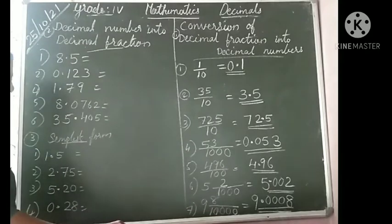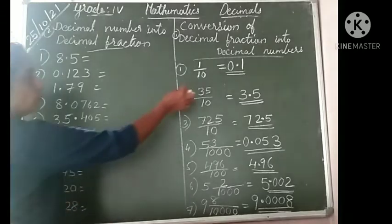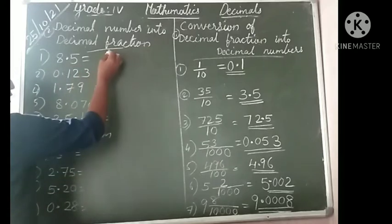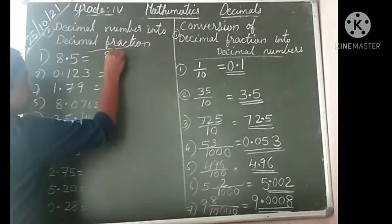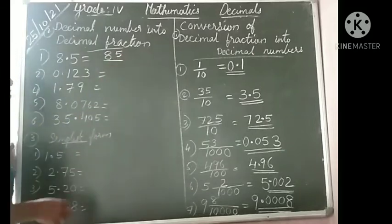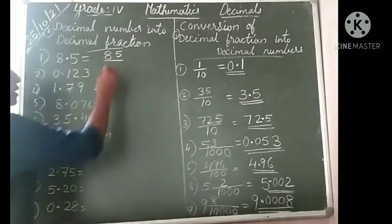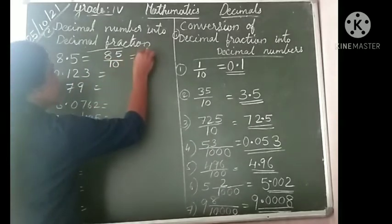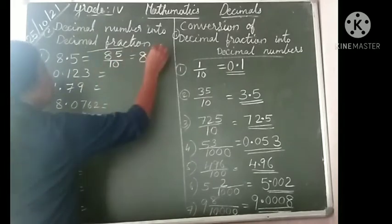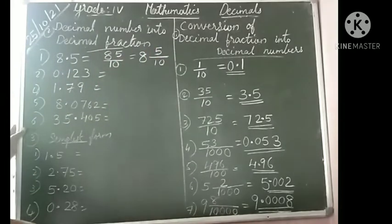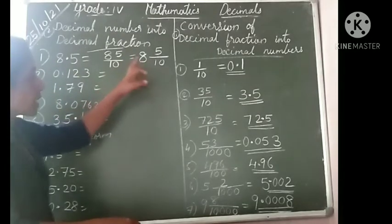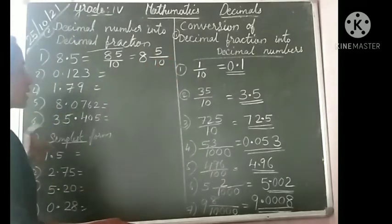Next section: converting decimal numbers into decimal fraction. Take 8.5. We can write this two ways: as 85 divided by 10, since there is only one digit after the decimal point. Or we can write it as 8 and 5 by 10 — 8 is the whole part, and 5 by 10 is the fraction. Both ways are correct.